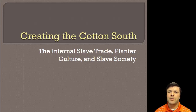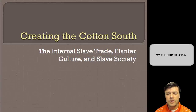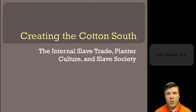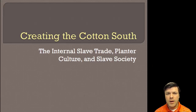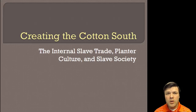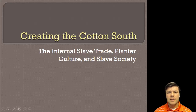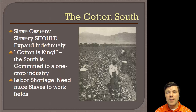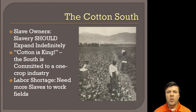Coercive labor in some form or fashion has been an important part of our class since this semester began. We've talked about slavery — probably the most important form of coercive labor in this class — and we've talked about it in different regions of the country and in different cash crop settings. At the beginning of the 19th century, leading southerners including people like George Washington and Thomas Jefferson felt that slavery would die out within their lifetime, and there's a very easy to understand reason why.